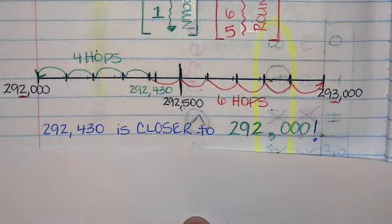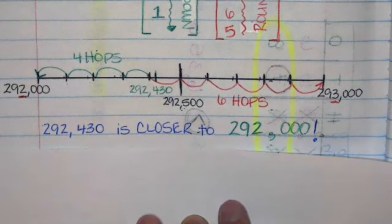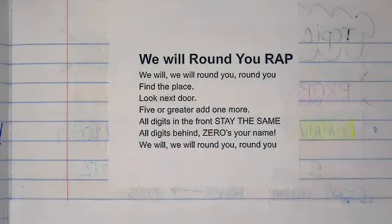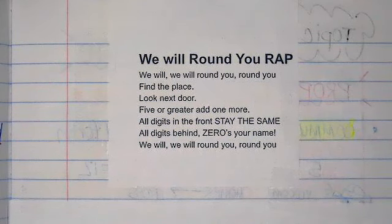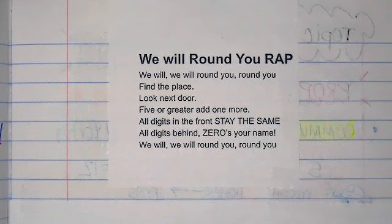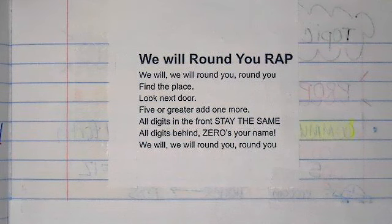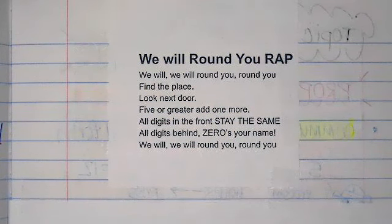The next thing I'd like to show you is a song to help us remember rounding — it's the 'We Will Round You' rap, like 'We Will Rock You.' Here it is: 'We will, we will round you! Find a place, look next door — five or greater, add one more. All the digits in the front stay the same, all the digits behind, zero's your name. We will, we will round you!'